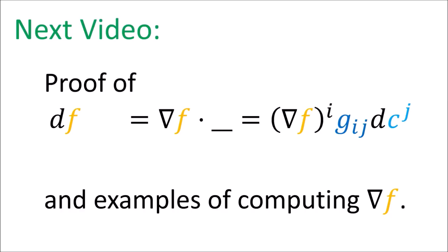In the next video I'm going to more carefully go over the proof of why this formula for del f dot something makes sense, done using tensor products, and I'll also give a concrete example of computing the components of del f in two different coordinate systems.